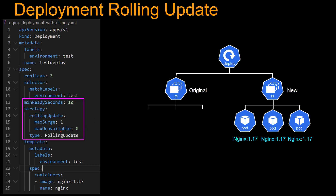The last remaining thing is max unavailable zero. This is an optional field. It means the maximum number of unavailable pods from the desired state. The desired state is three replicas and max unavailable is zero, so the update has to be done such that there are at least three pods running. If I had put max unavailable as one, that means maximum unavailable pods taken away from the desired state is one — so deployment has to be done such that there are always two replicas running. Why two? Because desired state is three, max unavailable is one, so three minus one is two. We're going to see all of this in a demo.